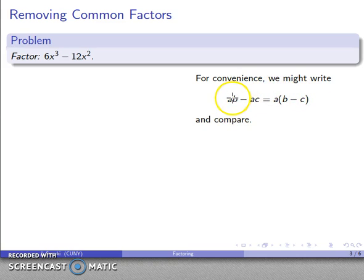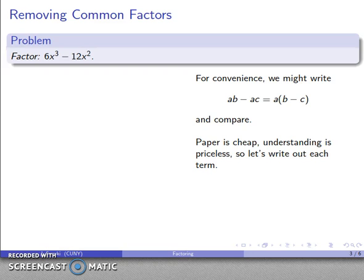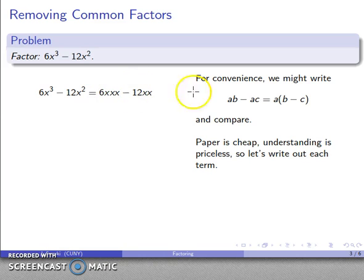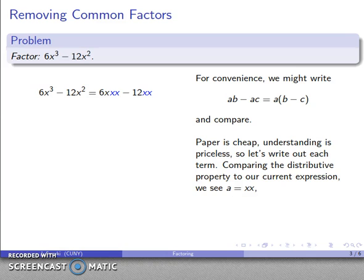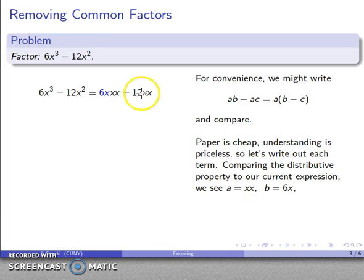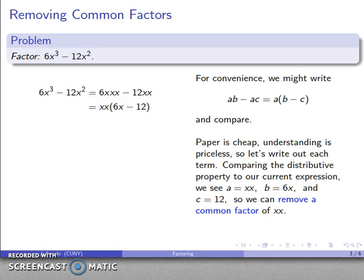For convenience, write out the distributive property as: a times (b minus c) equals ab minus ac, and compare it to the expression. Paper is cheap; understanding is priceless. Write out each term: 6x cubed is 6·x·x·x, and 12x squared is 12·x·x. Looking at both terms, we see xx appears in both, so A is xx. What's left over is 6x in the first term and 12 in the second.